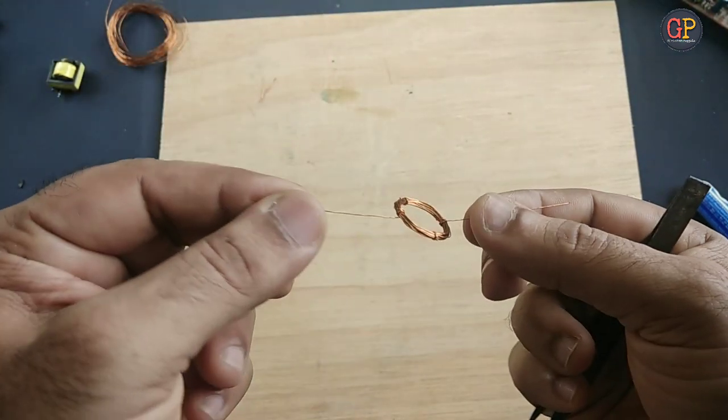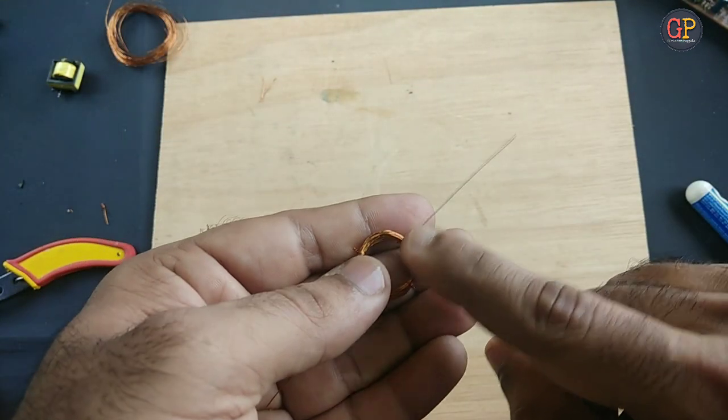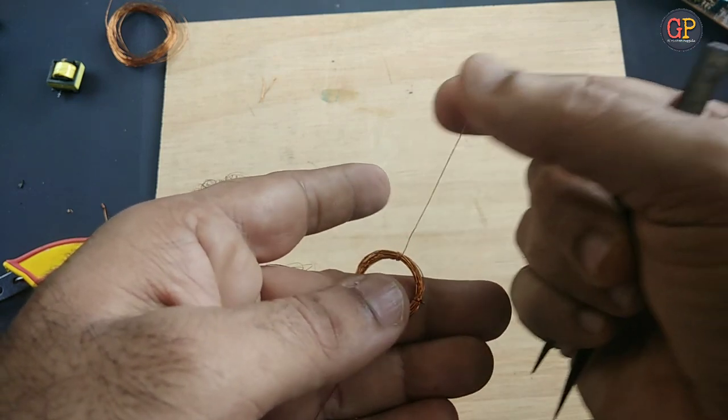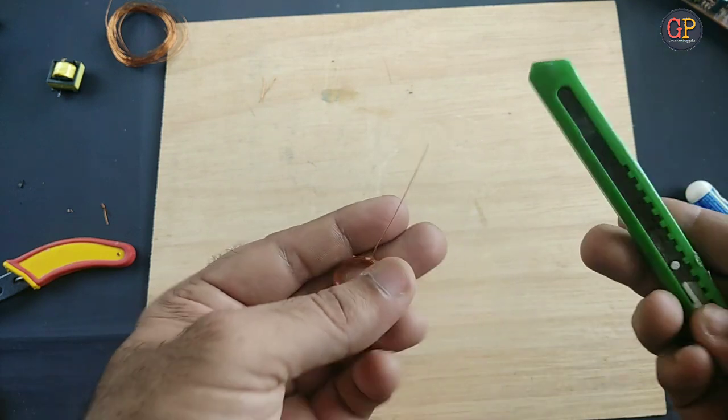Next important thing: this is insulated copper wire, so we have to remove the insulation on this part so that the current passes through. You can use a normal blade.